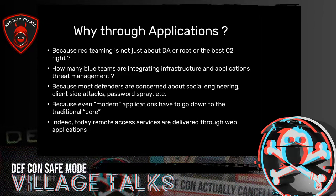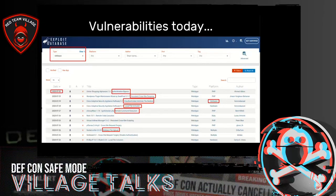Someone could say that applications today are in the cloud, but we are seeing that few companies are migrating their core to the cloud. They still keep it on-premises, and modern applications just need to go down to the core. And finally, because remote access services are delivered through web applications. Besides, applications suffer the same problems for a long time. As you can see in this image from ExploitDB, this is not only true for common applications, but also for embedded ones — we can see a Cisco device suffering from local file inclusion, a very old kind of vulnerability in the application field.